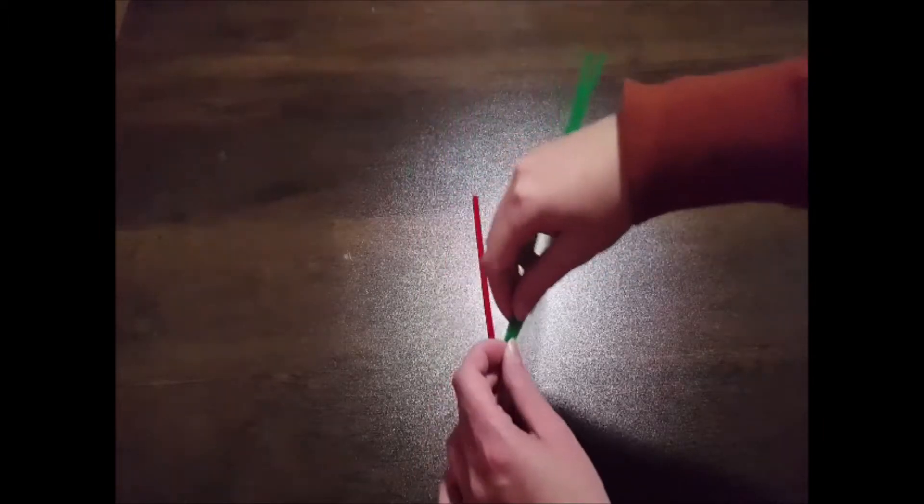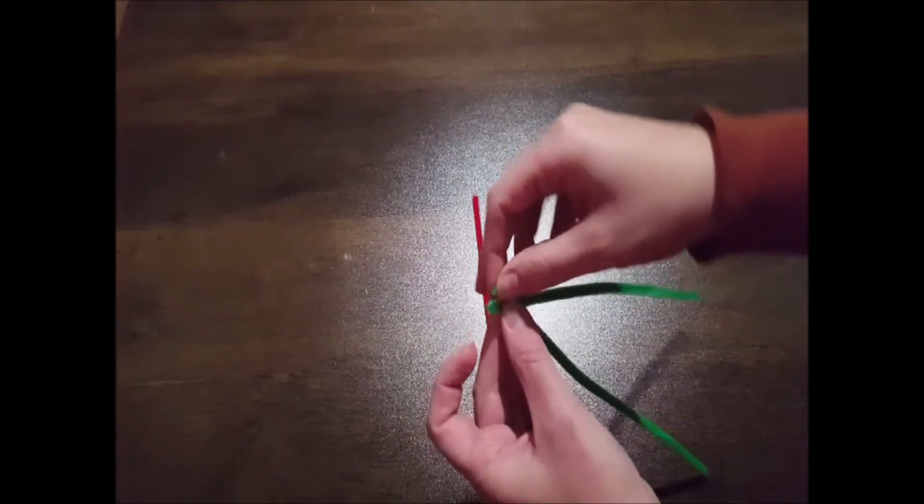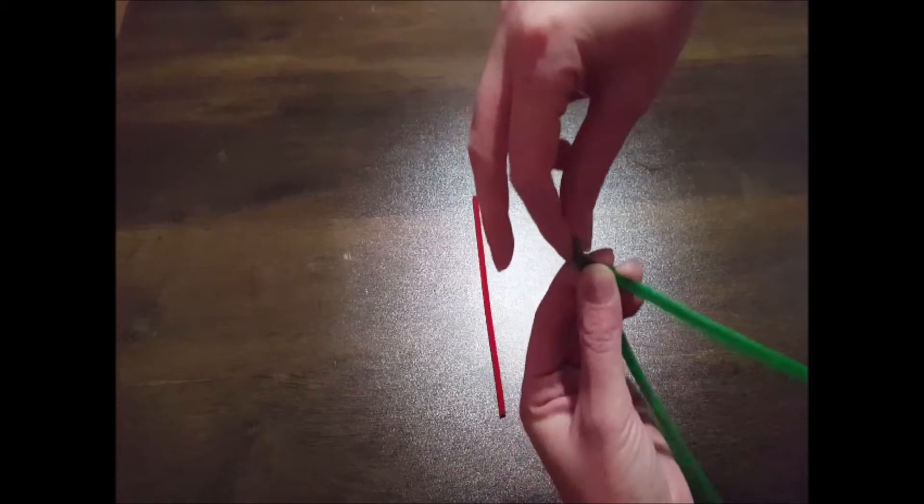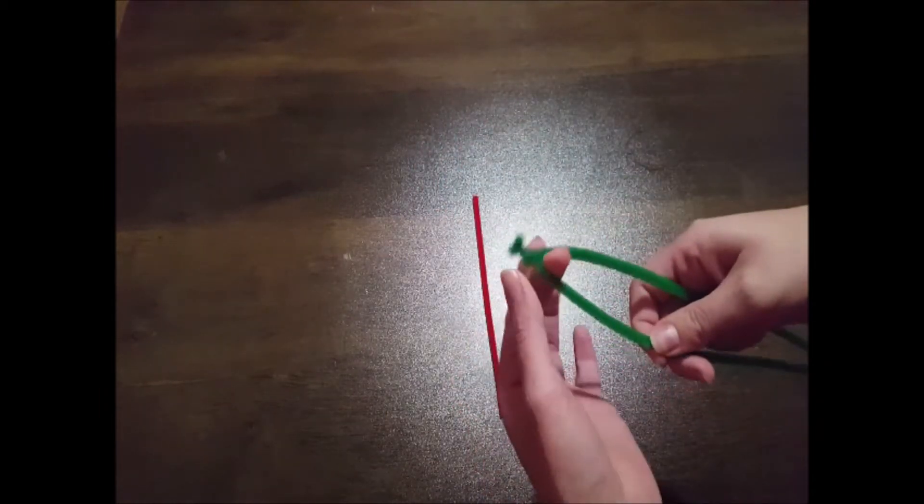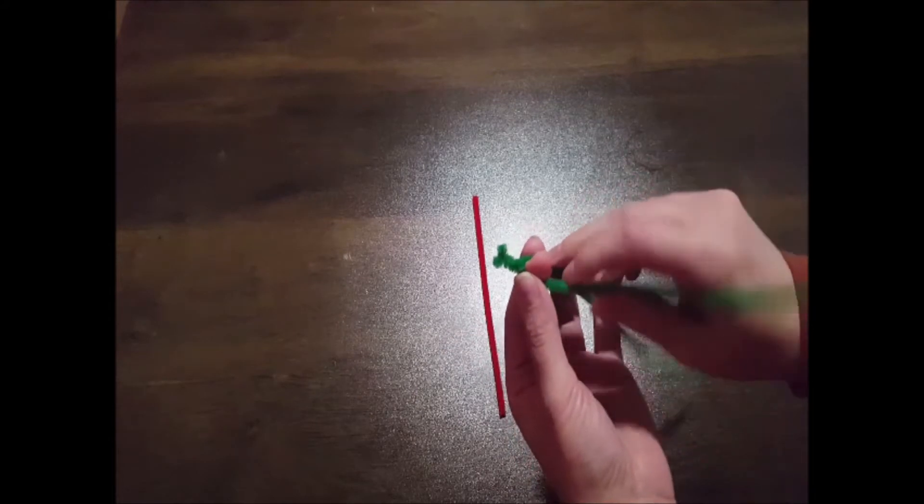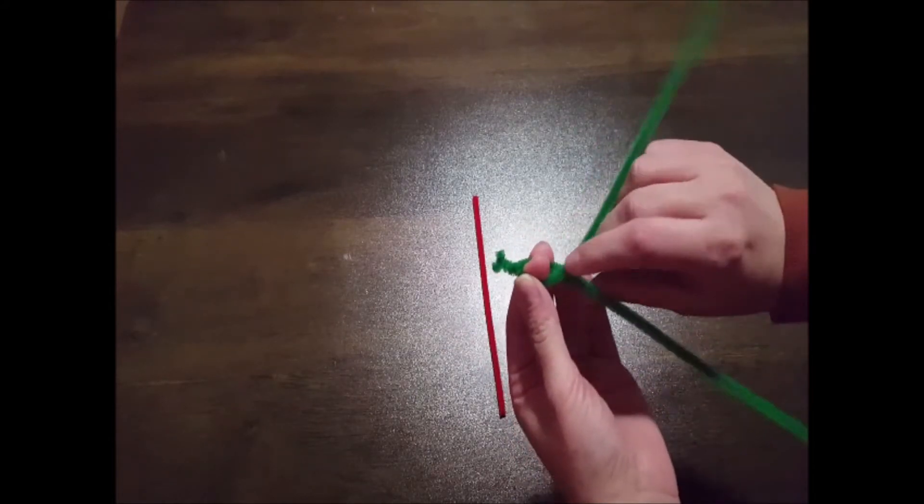Take the two green pipe cleaners and twist the ends together. I give about three good twists to make sure that it holds. Then we're going to use the index finger to give the wreath its shape.